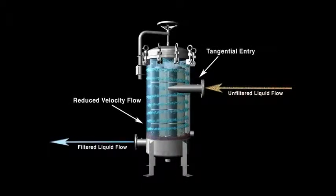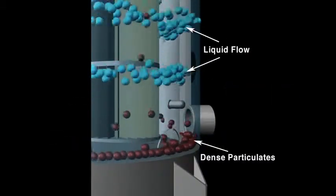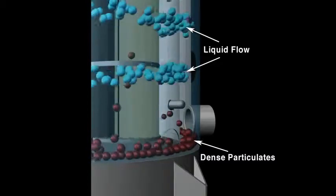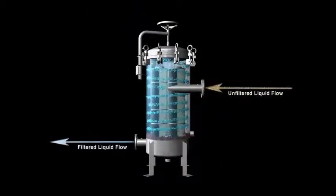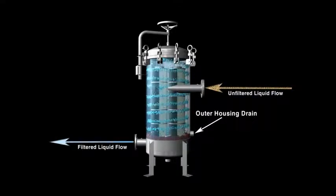Many of the dense solids settle into the outer chamber, thus extending filter cartridge life. There's a separate drain in the housing to bleed off the sediment, either manually or with an automatic timed valve. After dropping dense solids into the outer chamber of the housing, the liquid flows over the inner wall and into the filter chamber.